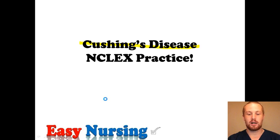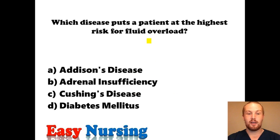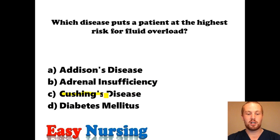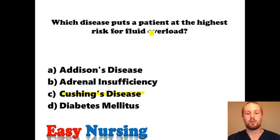Let's get started with some practice questions. Which disease puts a patient at highest risk for fluid overload? We see Addison's and Cushing's — just remember that these are opposites. If this said 'fluid imbalance,' both could apply, but they put patients at different types of fluid imbalance. Cushing's disease is going to be too much aldosterone produced by the adrenal glands, and aldosterone tells the body to hold on to salt and water, because water and salt typically stay together. So with Cushing's, you hold on to salt and water — that's the answer.